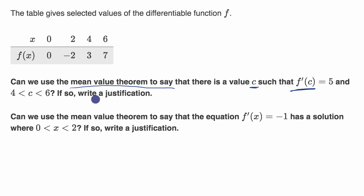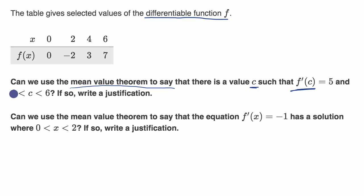To use the mean value theorem, you have to be differentiable over the open interval and continuous over the closed interval. It seems like we've met that, because if you're differentiable over an interval, you're definitely continuous over that interval — f is stated to be a generally differentiable function. The next condition is that the slope of the secant line between (4, f(4)) and (6, f(6)) must equal the derivative at some point in between.